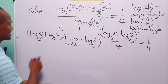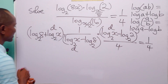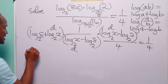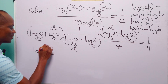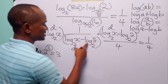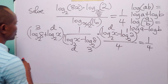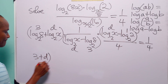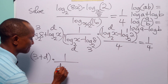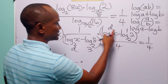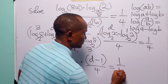Now let log base 2 of x equal d. We also note that log base 2 of 8 equals 3 since 8 = 2³, and log base 2 of 2 equals 1. So this equation becomes: (3 + d) multiplied by 1 over (d − 3), multiplied by (d − 1), over 4, equals 1/4.